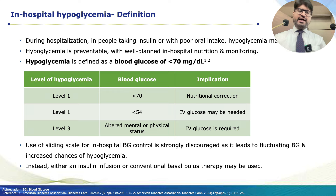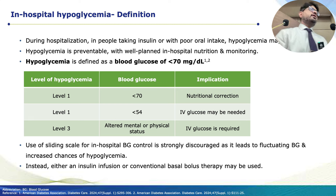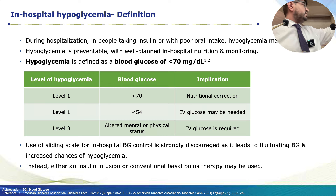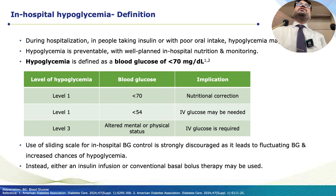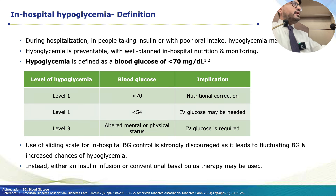Regarding hypoglycemia management: understand the definitions. Blood sugar less than 70 mg/dL is hypoglycemia — not less than 100. Level 1 hypoglycemia is less than 70 mg/dL. Level 2 is less than 54 mg/dL. Level 3 is any situation where the patient has altered mental status secondary to hypoglycemia. Level 2 and Level 3 require IV glucose; Level 1, if the patient can take orally, can be managed with oral dextrose.